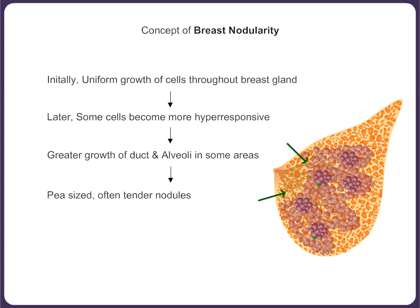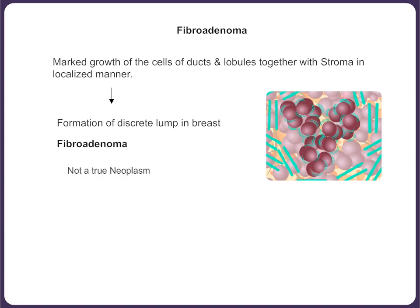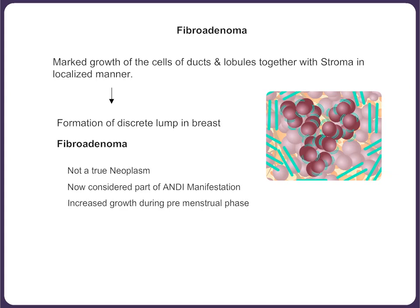Marked growth of ductolobular cells along with the stroma in a localized manner may result in formation of a discrete lump in the breast called fibroadenoma. Fibroadenoma is not a true neoplasm and is now considered as part of ANDI manifestation. This view is supported by the fact that some girls experience increased growth of fibroadenoma in the premenstrual phase and reduction in size after the onset of menstrual flow.